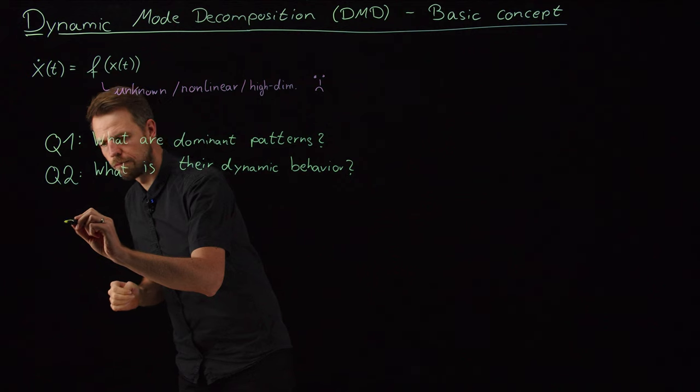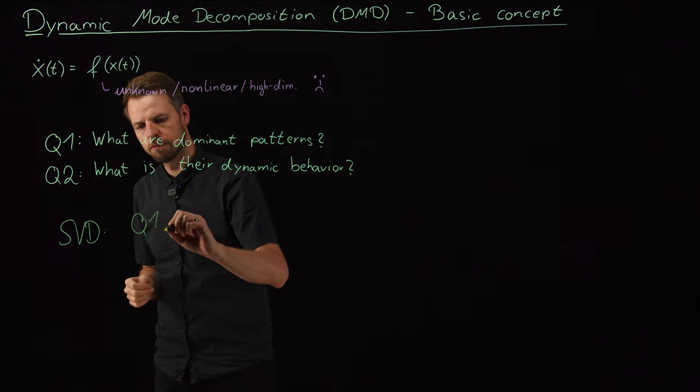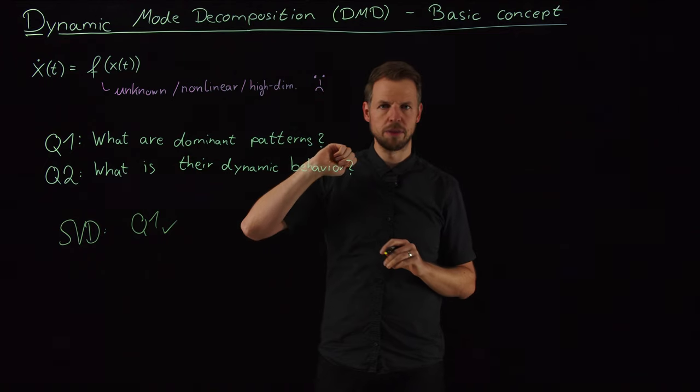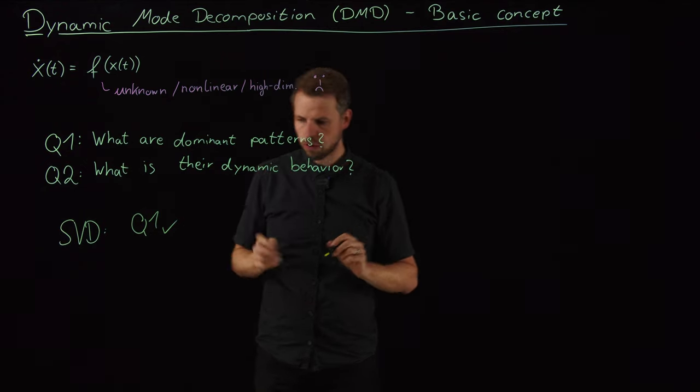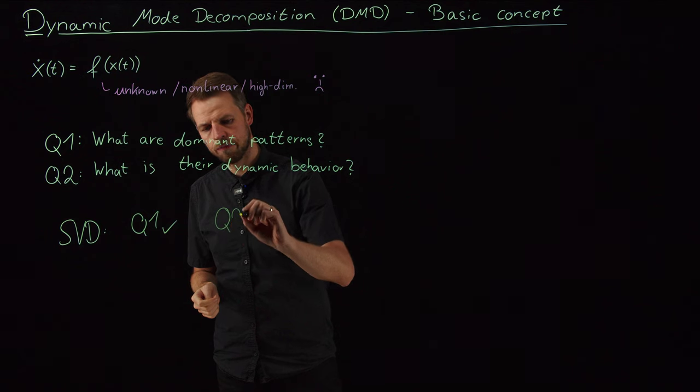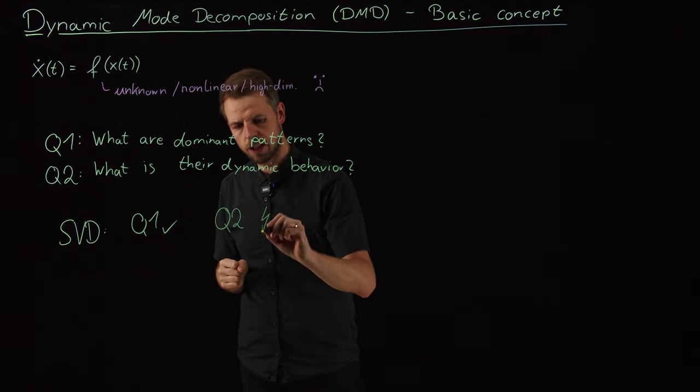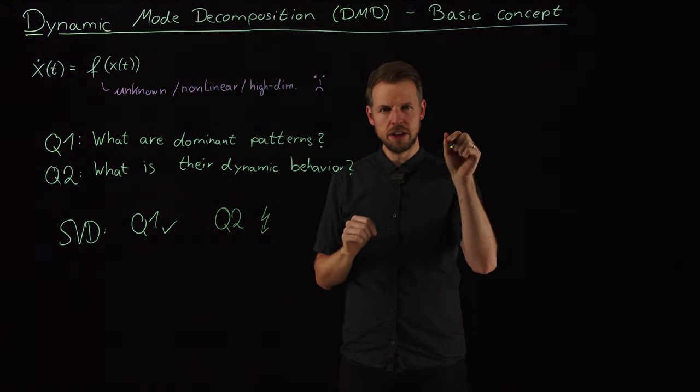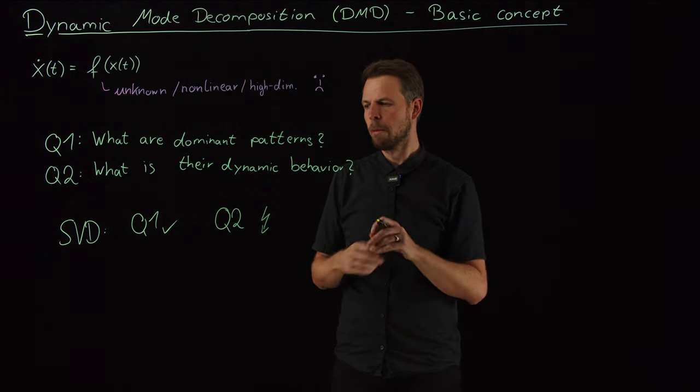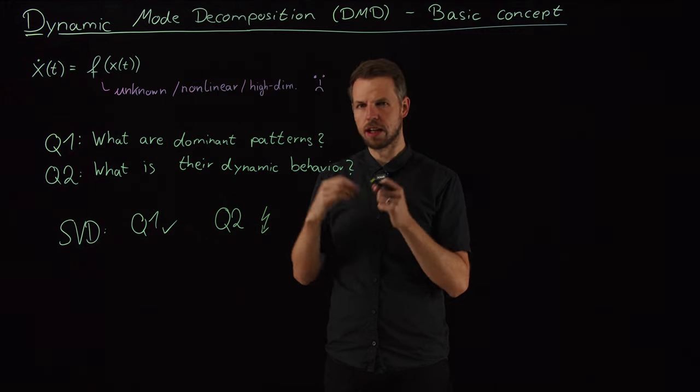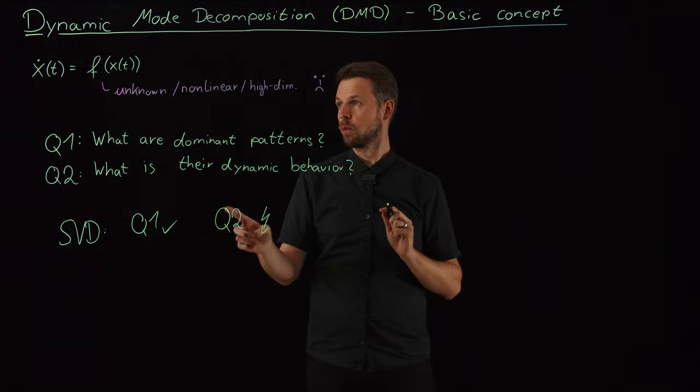So the singular value decomposition answers our question one, so this is good. We can use SVD to find these patterns, even if we do not know the system. And as long as we have data, we can do this. But here's the problem if we want to study question two. This becomes problematic if we do not have the equations. Or you can do, we talked about this briefly, the V matrix in the SVD, if we take a time series, contains some sort of temporal evolution of the modes, but it's very hard to make general statements about stability and long-term behavior, you really have to look at the numbers.